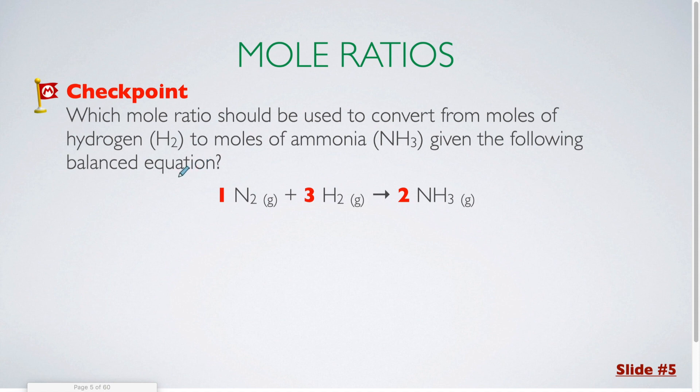Remember for all checkpoints you should be writing these out within your notebook. For this checkpoint, which mole ratio should be used to convert from moles of hydrogen? So it looks like we're going to have to start with the H2 and we are going to moles of ammonia. So I'm starting with moles of H2. That means that moles of H2 is going to need to go in the bottom of my conversion factor and I'm looking for moles of ammonia, which is NH3.